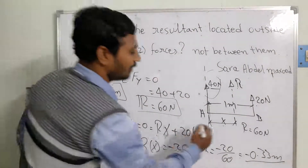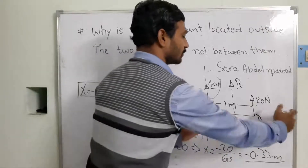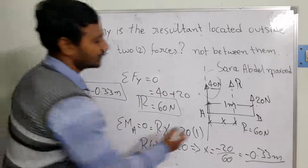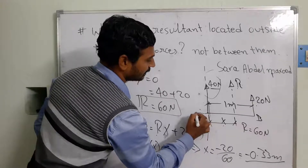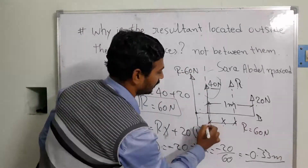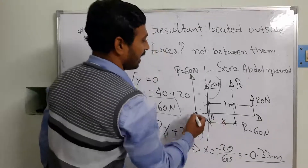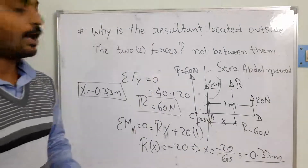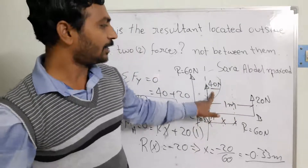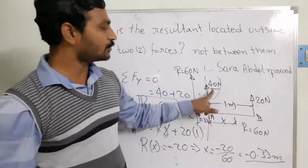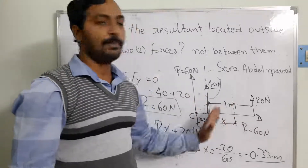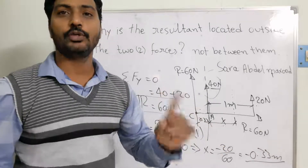Since x = −0.33 meters, the resultant is located 0.33 meters to the left of A — outside the span between A and B. R = 60 Newtons acts there. The resultant component is not between the two forces. You can see that the larger force is 40 Newtons, and the resultant shifts towards that side, ending up outside the points A and B.